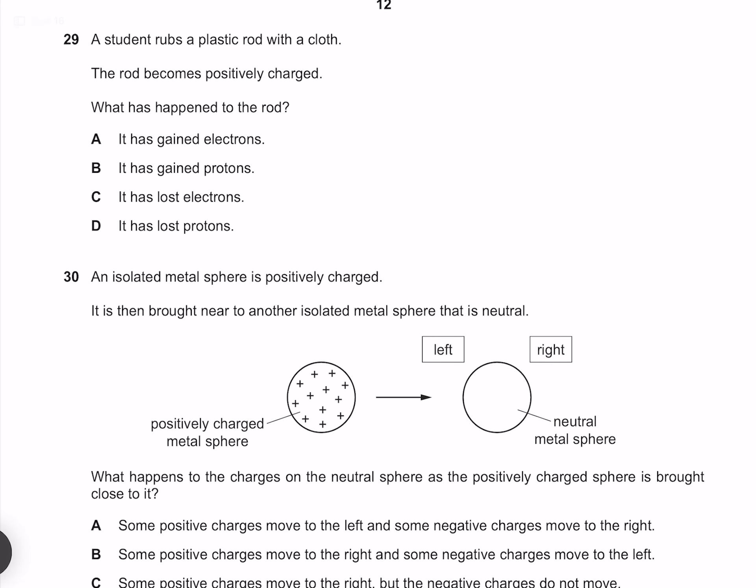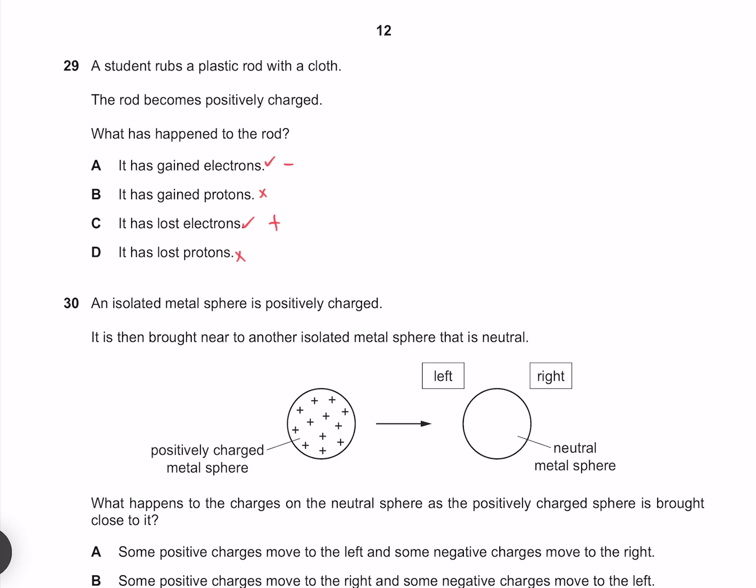A student rubs a plastic rod with a cloth. The rod becomes positively charged. What has happened to the rod? This type of charge occurs because of the movement of electrons, not of protons. If the rod were to gain electrons because electrons are negative, we would expect it to be negatively charged, as opposed to losing negative electrons, which will make it positively charged. Because our rod is positively charged, it must have lost electrons. And our answer must be C.